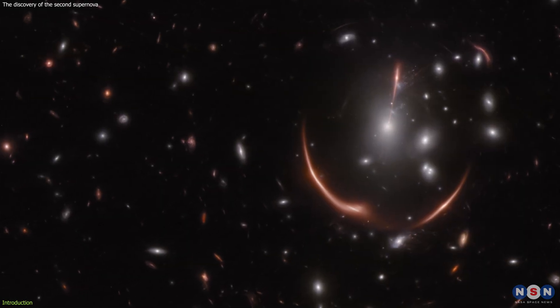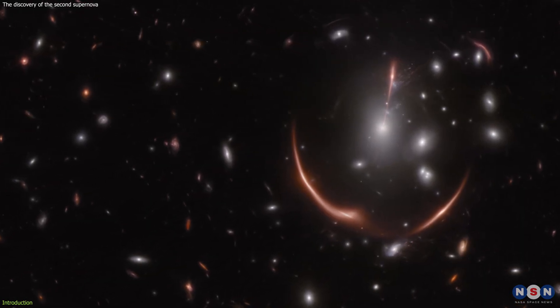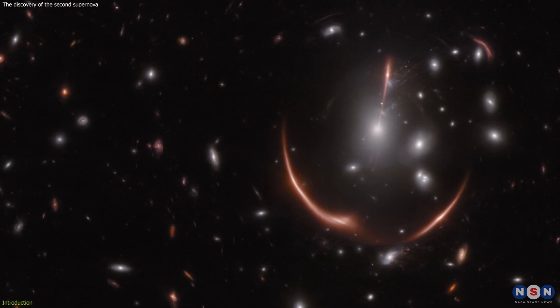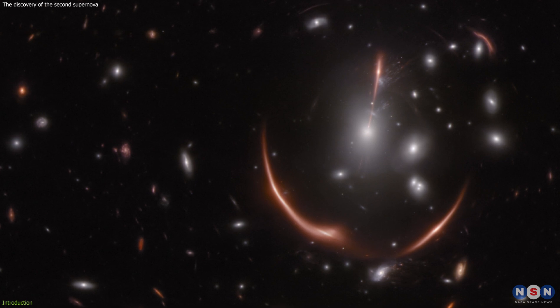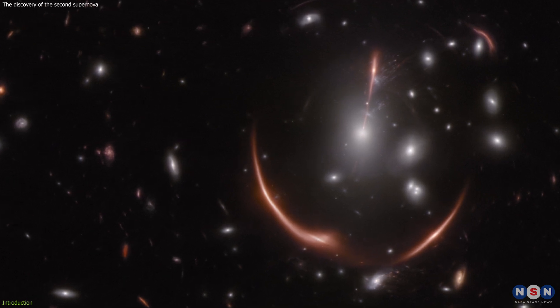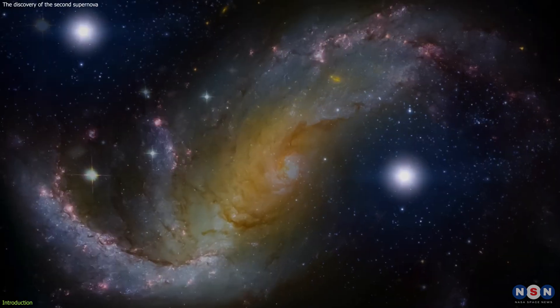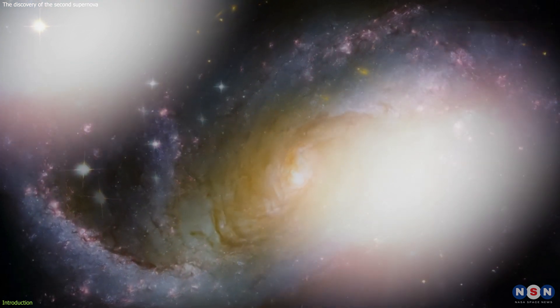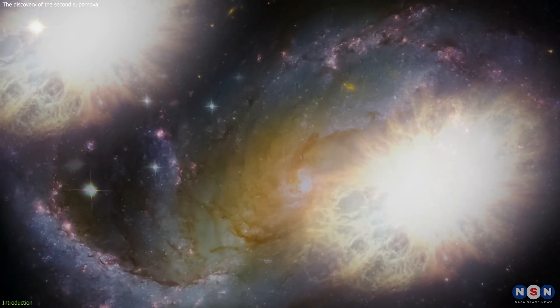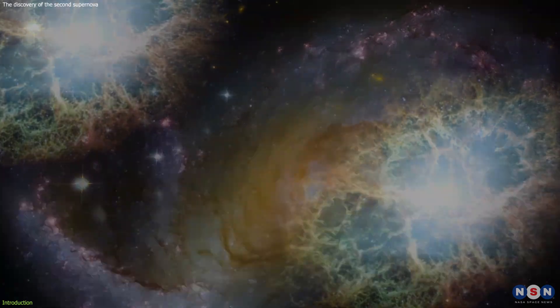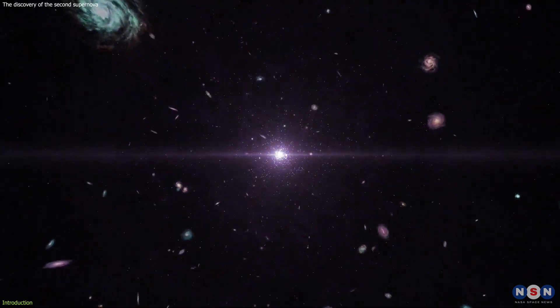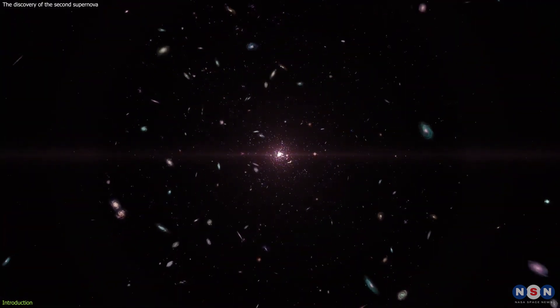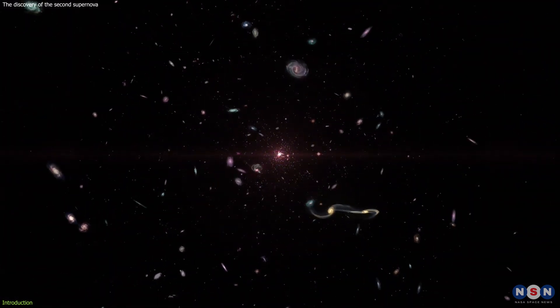Well, not if you have a powerful telescope like the James Webb Space Telescope and a cosmic phenomenon called gravitational lensing. In this video, we will explore the amazing discovery of the second supernova in MRGM0-138, a distant galaxy that is warped and magnified by a massive cluster of galaxies. This is the first time that two supernovae were found in the same lensed galaxy, and they have a fascinating connection. They are both named Requiem, and they are both crucial for measuring the expansion rate of the universe, one of the biggest mysteries in cosmology.